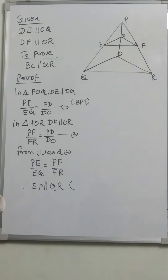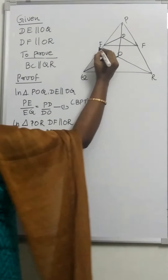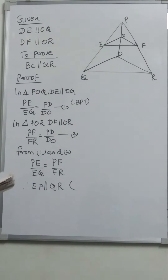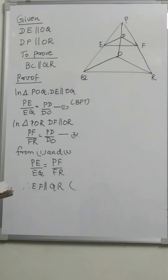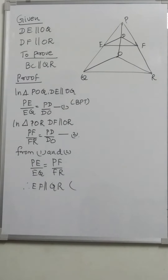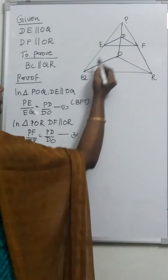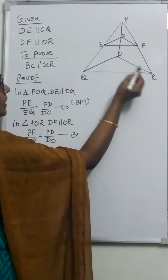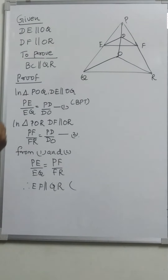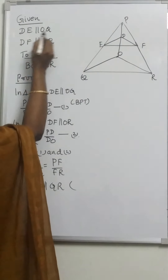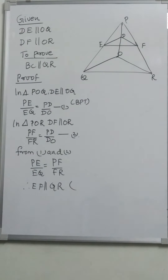Question number 5. In the given figure, DE is parallel to OQ and DF is parallel to OR. Show that EF is parallel to QR. Given: DE is parallel to OQ and DF is parallel to OR.